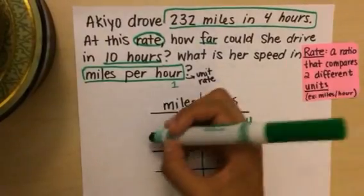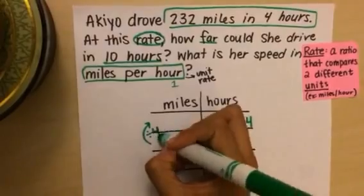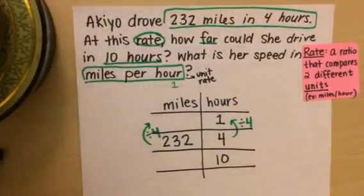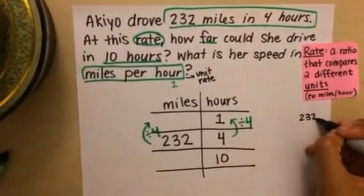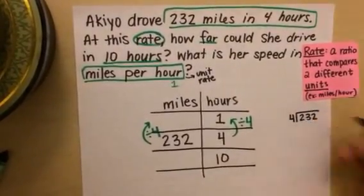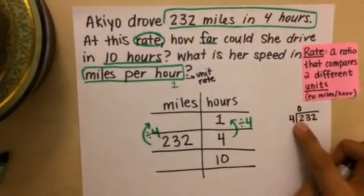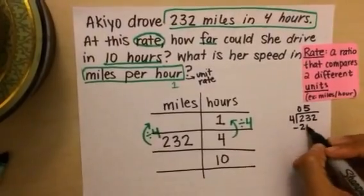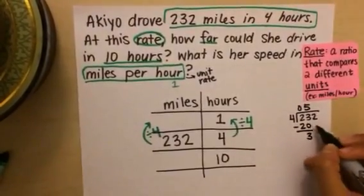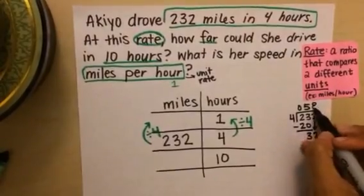So I can do the same thing on this side. And I can divide 232 by four. Don't know what that is off the top of my head. So I'm going to move off to the side so that my work stays neat. And I'm just going to set up my division problem. Four goes into two zero times. Four goes into 23 five times. I get a remainder of three. Bring down my two. Four goes into 32 eight times.